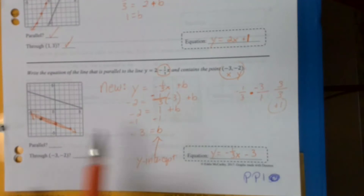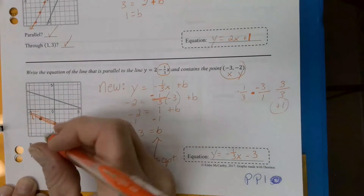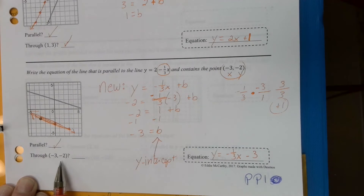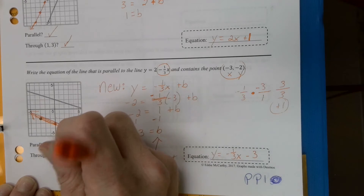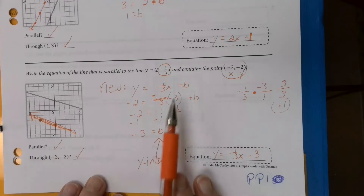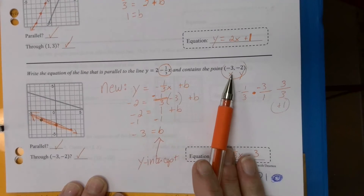Do they pretty much look parallel? We know they are because they have the same slope. Does it go through the point (negative 3, negative 2)? Yes. So this is how you write a parallel line given slope-intercept form and a point.